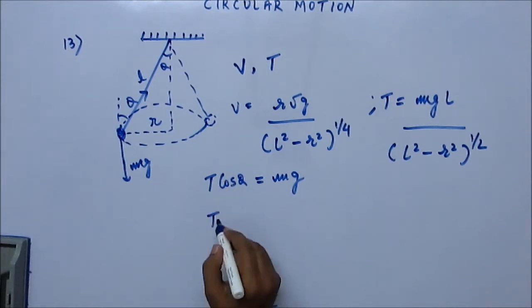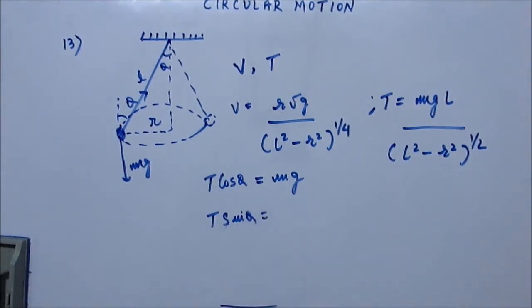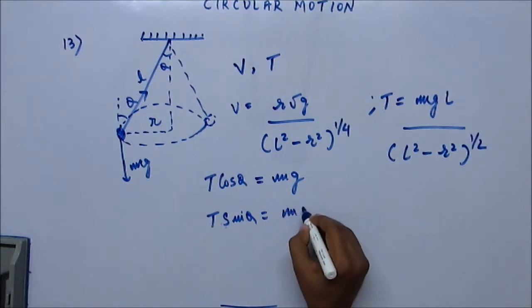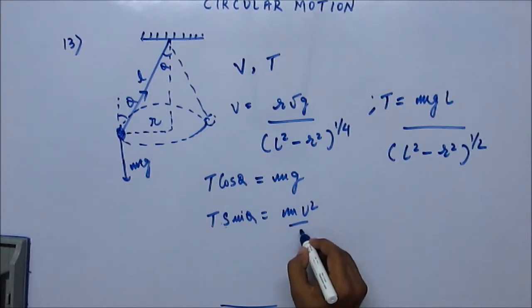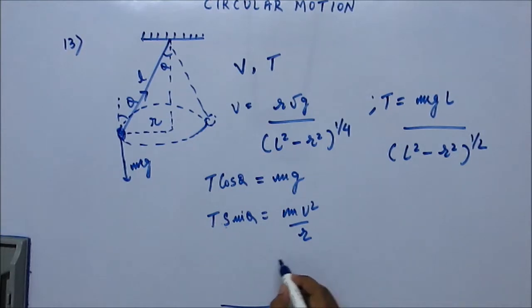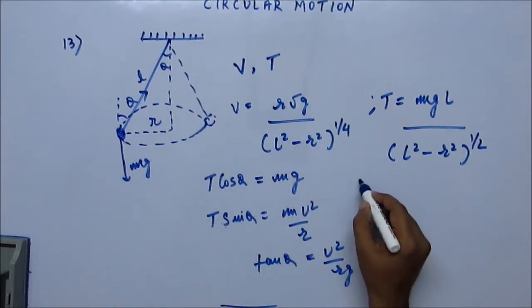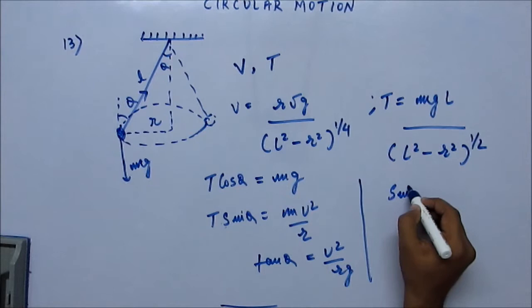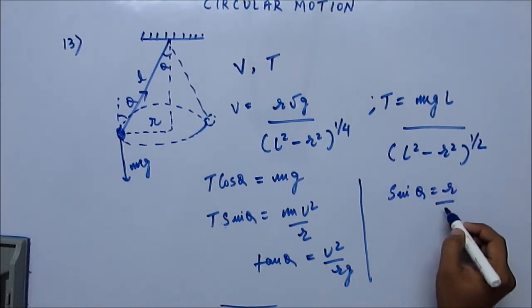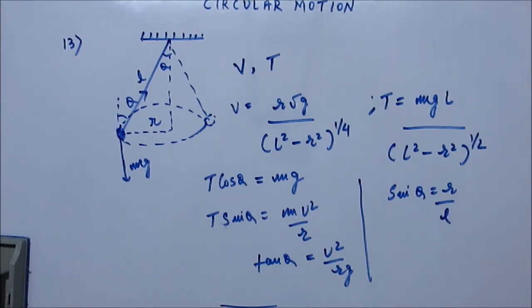You would also see that T sin theta is the only horizontal force acting on the bob, and this force must be the centripetal force. So this must equal mv² upon R. From here we get tan theta equals v² upon Rg. From this figure we also see that sin theta is R upon L.